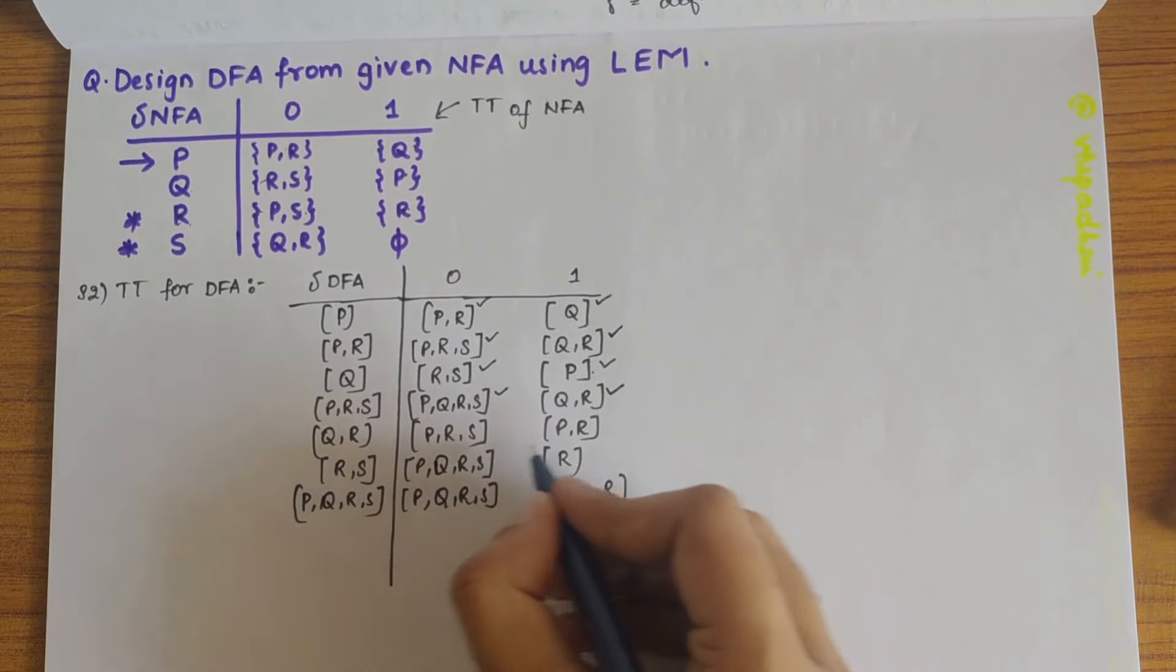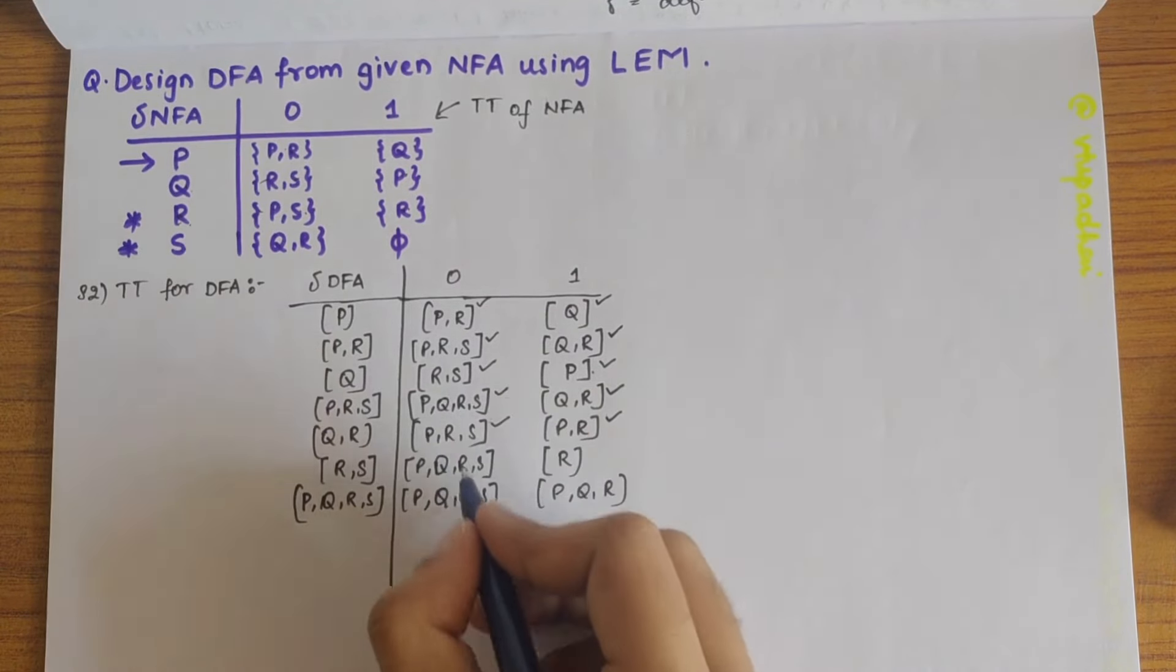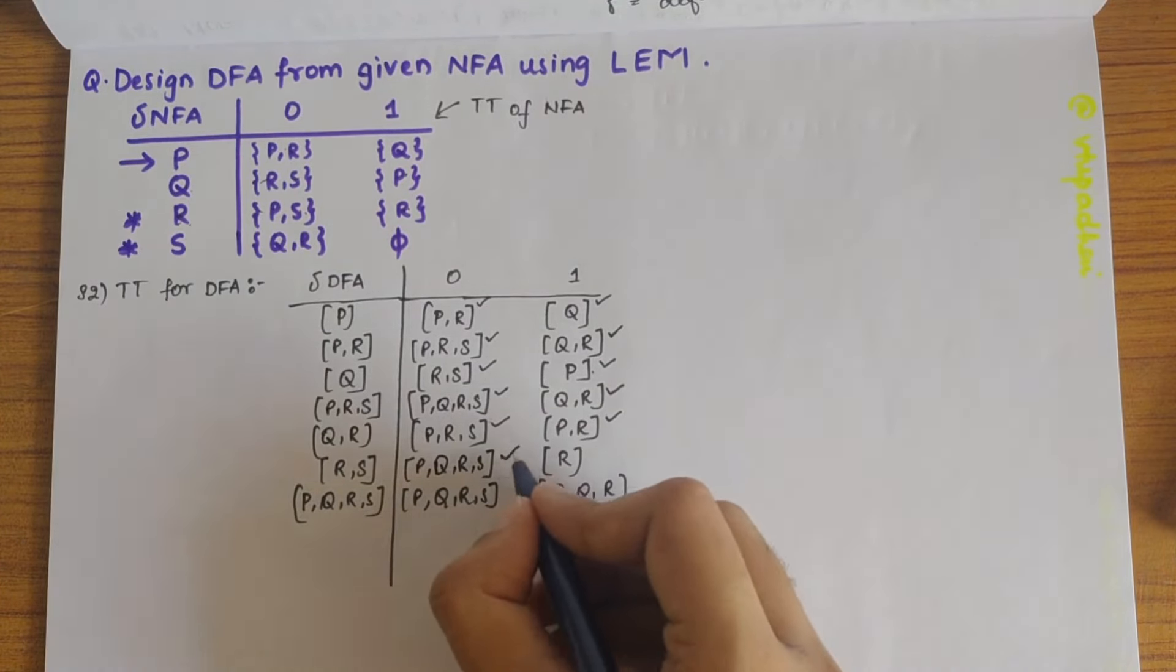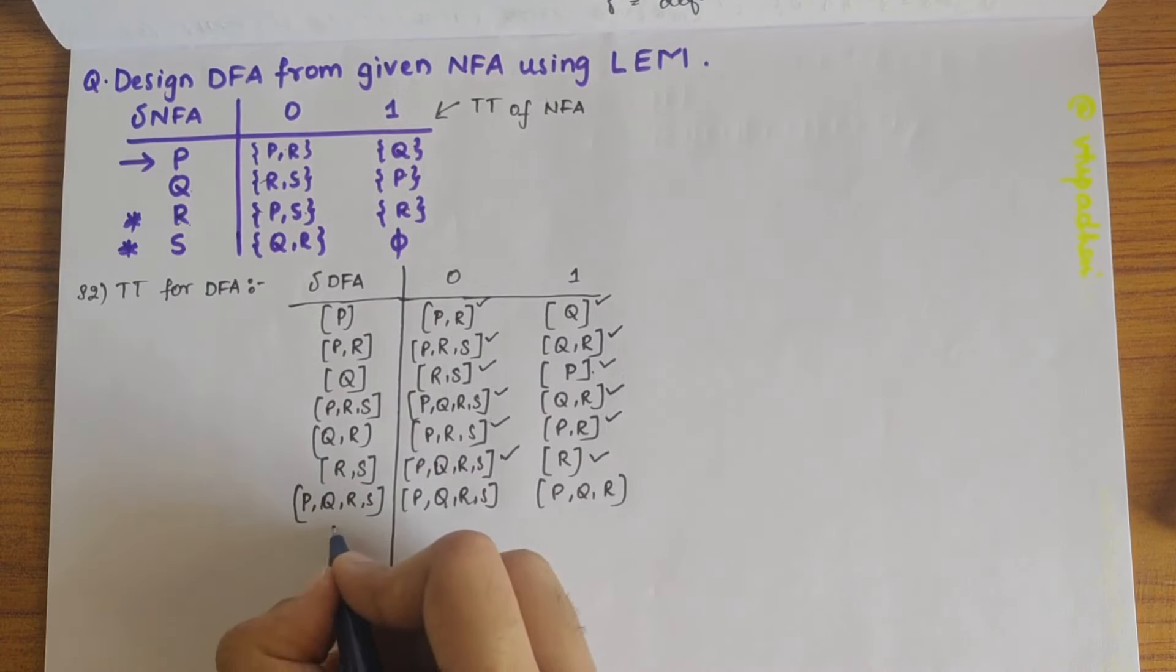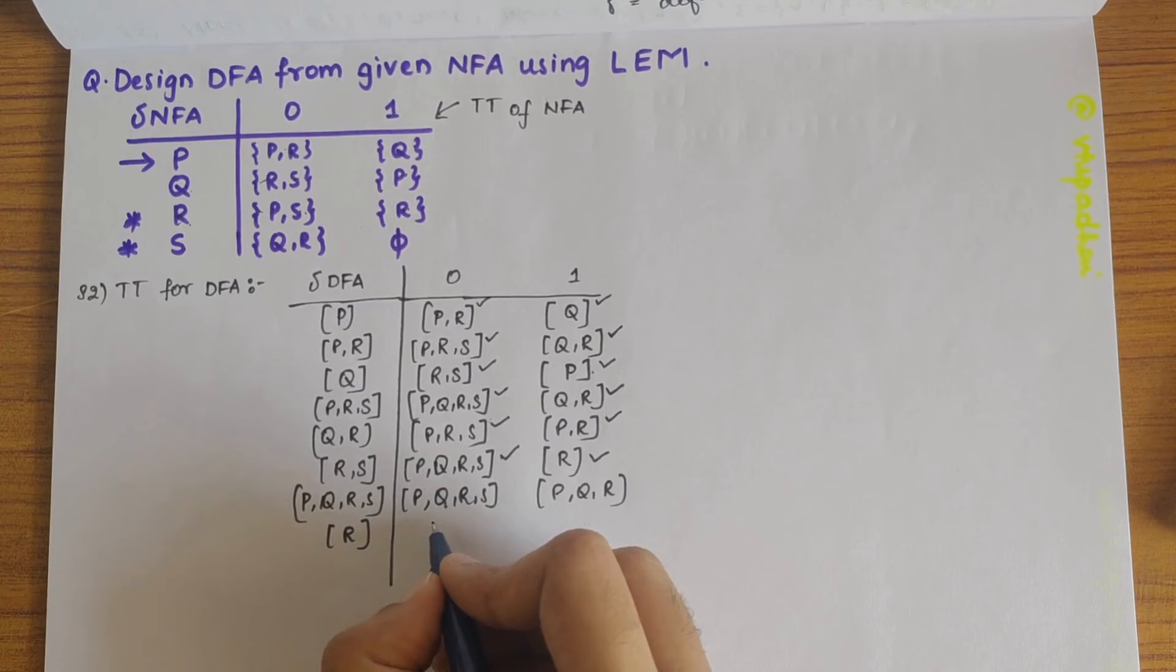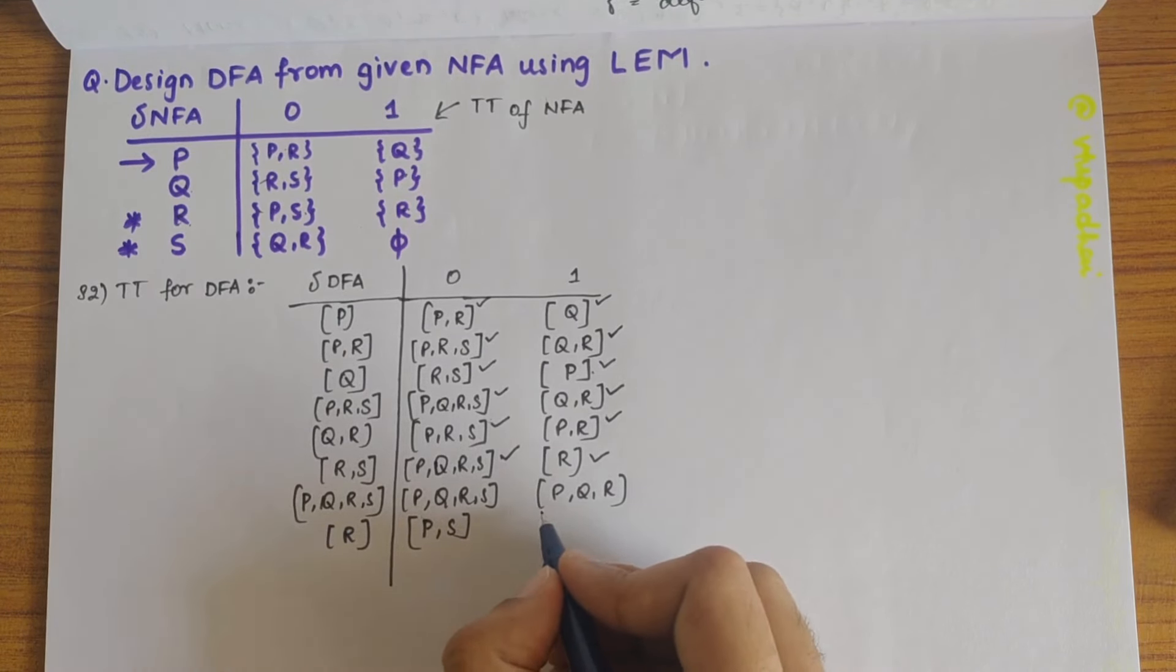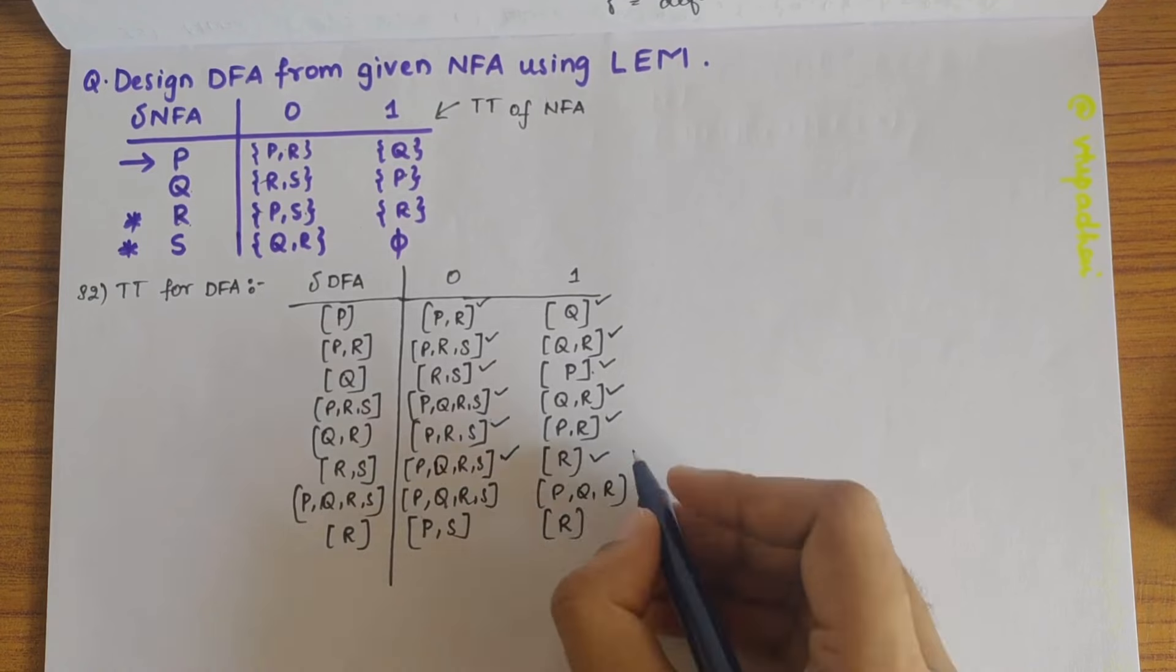QR, QR is already defined here. PRS, PRS is defined here. PR is defined here. Then PQRS, PQRS is defined. R, R is not defined. So let's write R here. So R on 0 gives PS and R on 1 gives R itself. So R is defined.